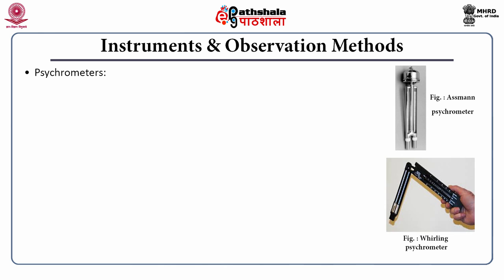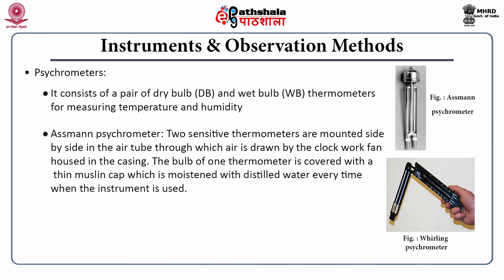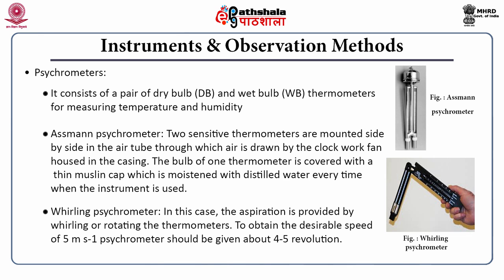Next is the psychrometer, which generally consists of a pair of dry bulb and wet bulb thermometers used for measuring temperature and humidity. There are two main types: the Assmann psychrometer and the whirling type psychrometer. In the Assmann psychrometer, air is drawn past the dry and wet bulbs by a clockwork fan. The bulb of one thermometer is covered with a thin muslin cap, which should be wetted with distilled water each time the psychrometer is used. In the whirling psychrometer, aspiration is provided by whirling or rotating the thermometers. The desired speed is 5 meters per second, obtained by giving 4 to 5 revolutions.